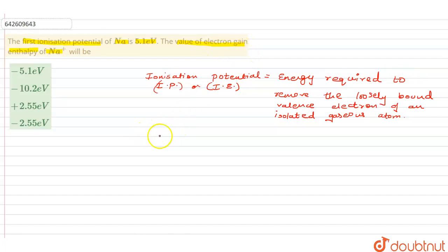Basically, electron gain enthalpy, which is also known as electron affinity.